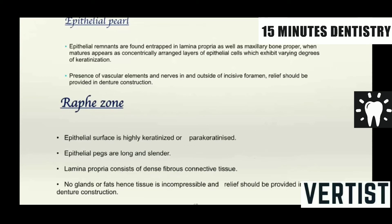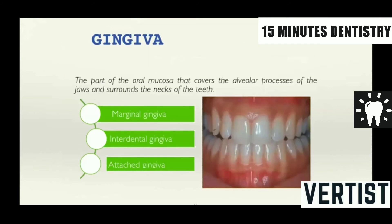Coming to the gingiva. The gingiva is a part of the oral mucosa that covers the alveolar processes of the jaws and surrounds the necks of the teeth. You have the marginal gingiva which exactly surrounds the tooth, the interdental gingiva present between the teeth, and the attached gingiva which is attached to the alveolar bone. The muco-gingival free gingival groove separates the marginal gingiva from the attached gingiva.